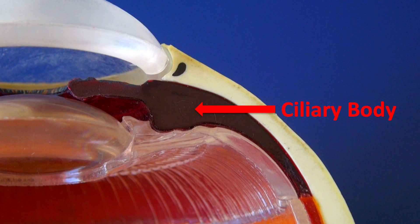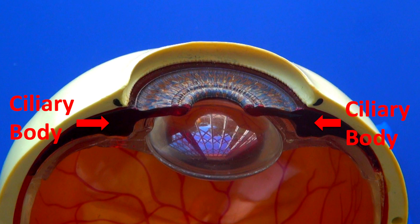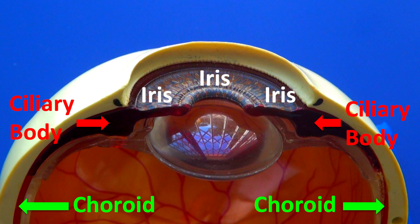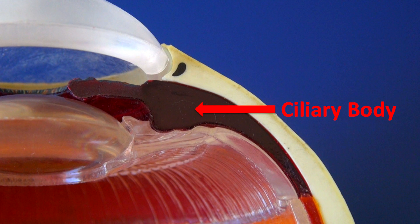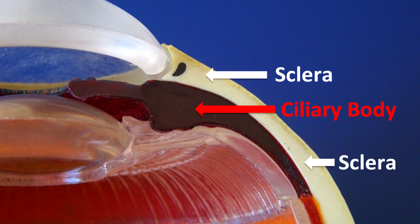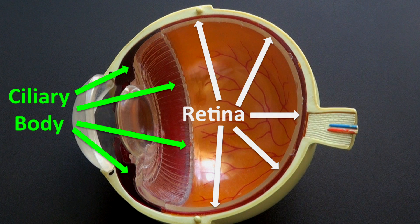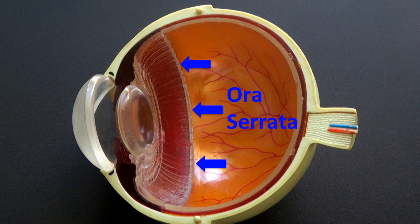The ciliary body appears as a triangular protrusion. In its most anterior part, it is continued by the iris, and its posterior part is continued by the choroid. Its outer surface is attached to the sclera and its inside to the vitreous. From behind, it is also continued by the retina with a stepped margin called ora serrata.